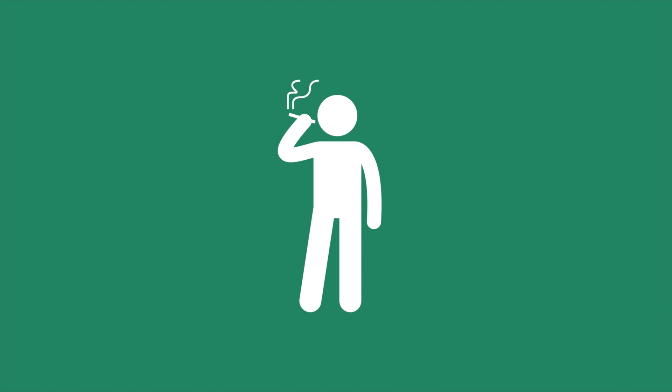But not all externalities are good. Cigarette smoking, for instance, can harm those who are nearby. The government aims to increase positive externalities and limit negative ones. Let's see how.